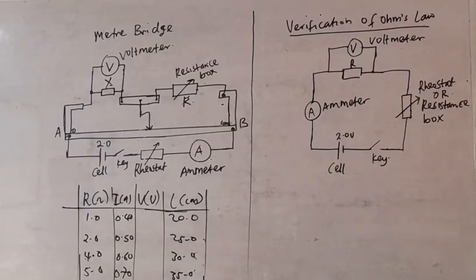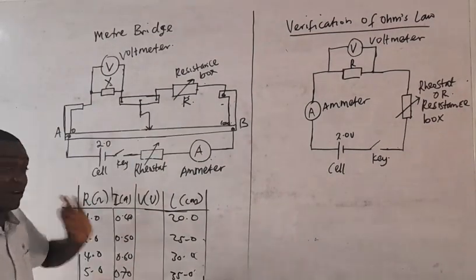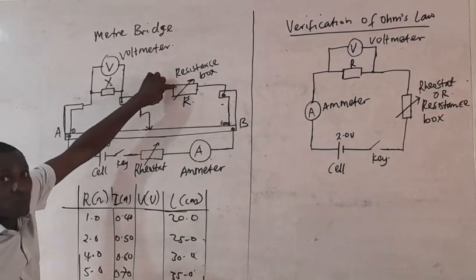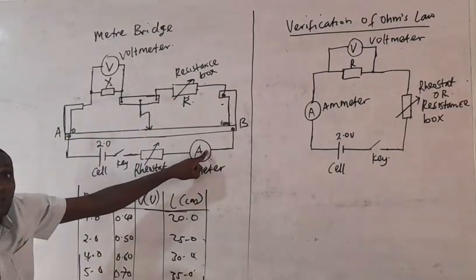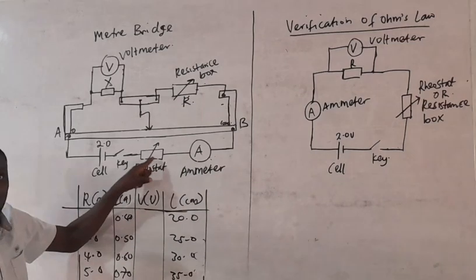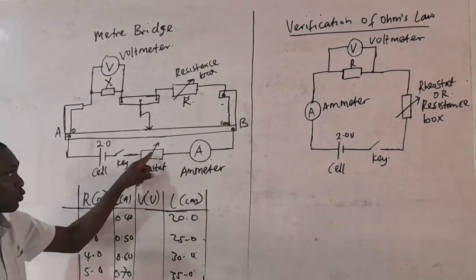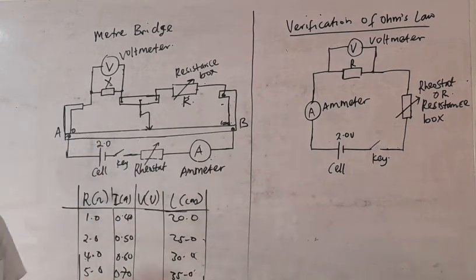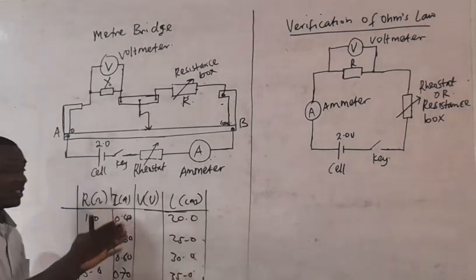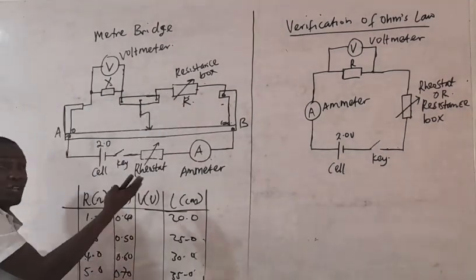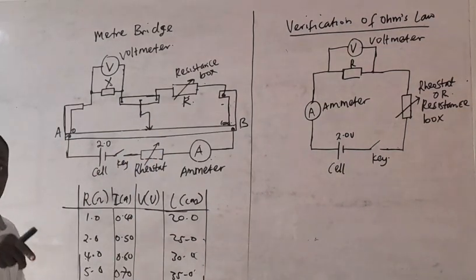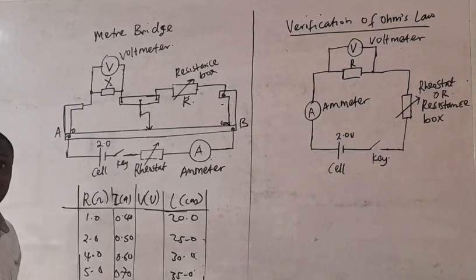So from here, if you are going to use this instrument, you are very likely going to be given a value of R. If that is going to come out, they are going to give you the value of current that you use the rheostat to adjust to. You are going to use the rheostat to adjust the current, and from that you can determine the length. These are the possibilities — it may not necessarily be all of them, but it may be a combination. I am going to demonstrate this on the instruments that I have here.